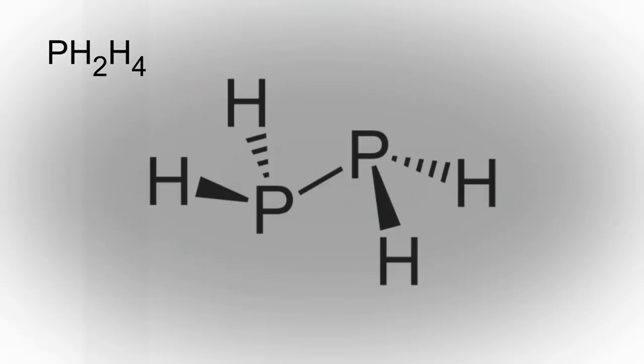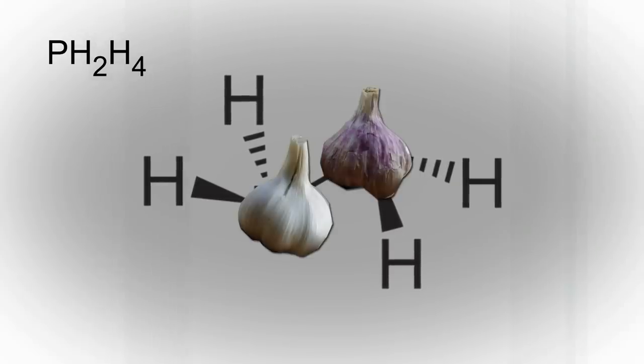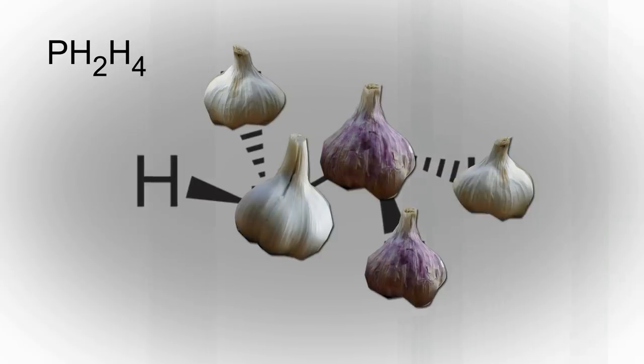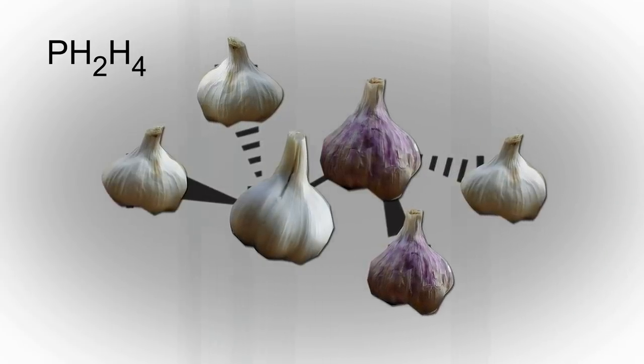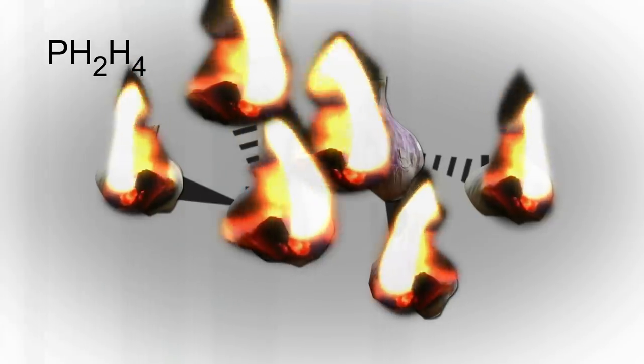There are two ways of making phosphine. You can make it by reacting a metal phosphide — that's a compound of a metal, say zinc or aluminium, and phosphorus — and if you react it with acid, phosphine bubbles out. Usually it comes out slightly impure, mixed with a molecule P2H4. This P2H4 has a strong smell of garlic, and it also has the property that if it's exposed to oxygen in the air, it immediately bursts into flames.